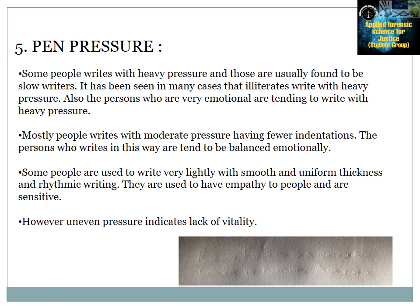The fifth feature is pen pressure. People who write with heavy pressure are usually slow writers; those who are very emotional also tend to write with heavy pressure. People who write with moderate pressure tend to be emotionally balanced. Some people write very lightly with smooth, uniform thickness and rhythmic writing — they tend to have empathy and are sensitive. Uneven pressure indicates a lack of vitality.